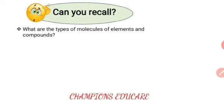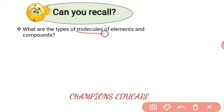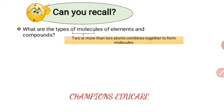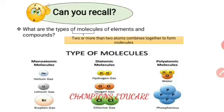At the starting of the lesson they have given some questions in the topic 'Can You Recall'. So what is our first question? What are the types of molecules of elements and compounds? So what are molecules? The simple meaning of molecules is that two or more than two atoms combine together to form molecules. So the total types of molecules are 3.